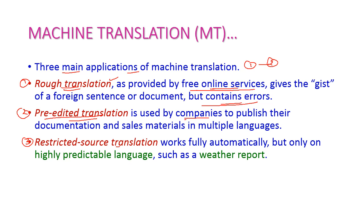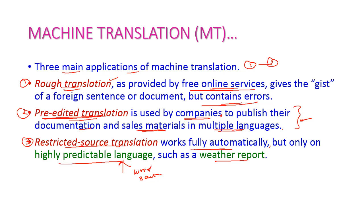Pre-edited translation is used by companies to publish their documents and sales materials in multiple languages. There should not be any errors in this content because those are very sensitive, hence they use pre-edited translation, and the translations take place without any errors. The third one is restricted source translation, which works fully automatically, but only on highly predictable language — meaning a very limited set of words or sentences. For example, a weather report, which contains only a limited set of words suitable for all types of weather. This type of translation is exclusive for particular applications only.